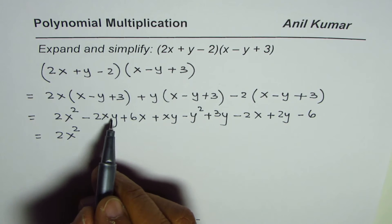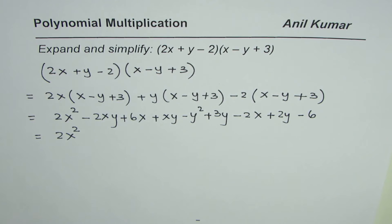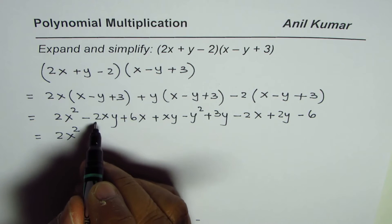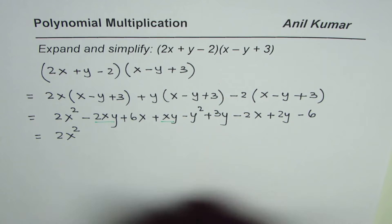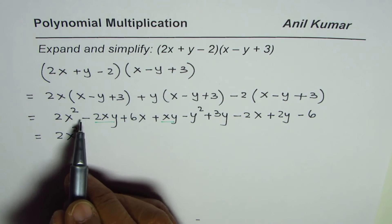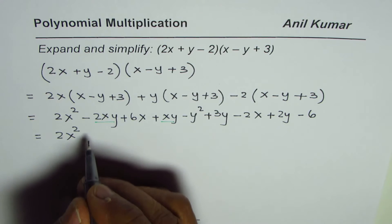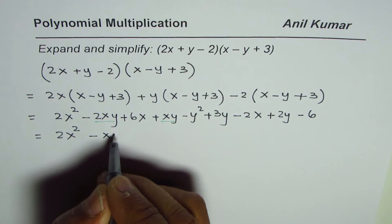Now xy terms. We have some xy terms. This is one: xy. Then we have another xy here. We will combine these two: -2xy + xy gives us -xy.